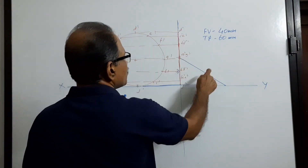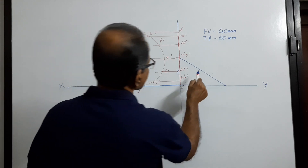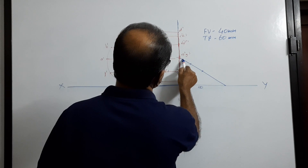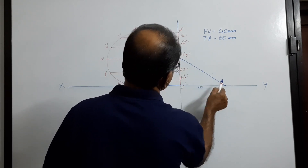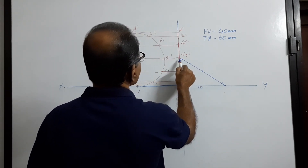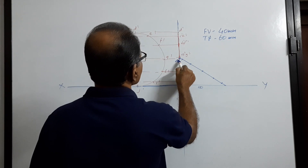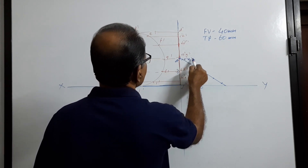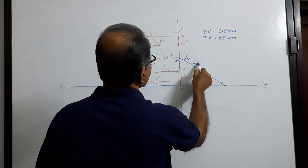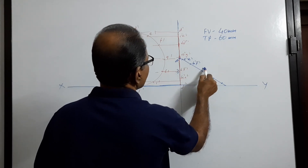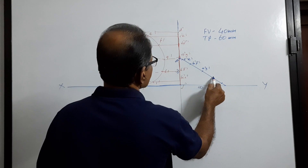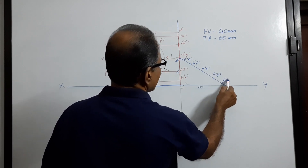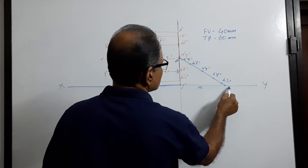Now take these points and mark them. This is D-double-dash, this is C-double-dash, E-double-dash. This is B-double-dash, F-double-dash. This is A-double-dash, G-double-dash. This is H-double-dash, L-double-dash. This is K-double-dash, I-double-dash, and this is J-double-dash.